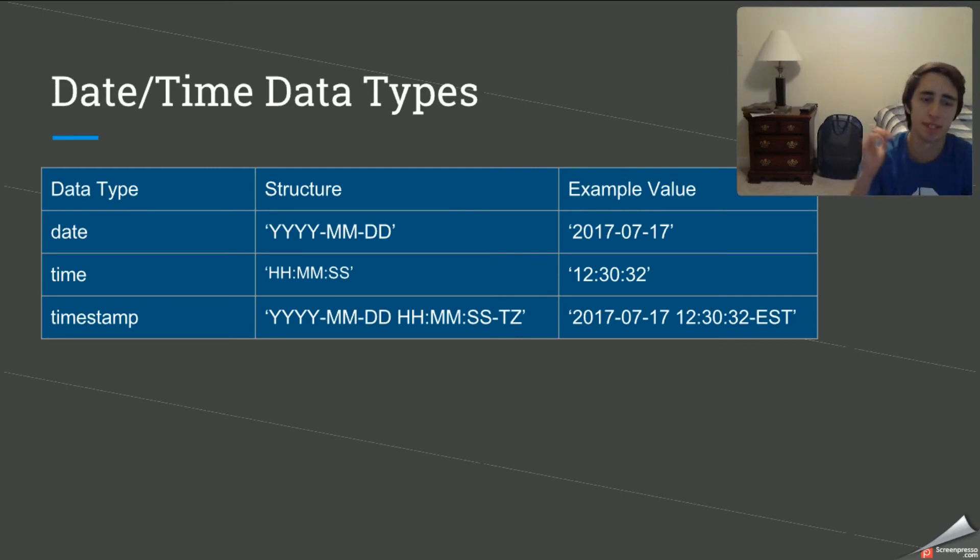Next up we have the date time data types. And again, I wanted to give you guys the simple ones that you'd be using the majority of the time. However, there are other date and time data types you can go learn. These are pretty self-explanatory. It's just knowing the structure of them. So if you have a specific date you want to record as a date in any kind of given table, you have to have the structure of a year, the months, and the day. For example, when we're recording this video is on July 17th of 2017. And we write it out in the year first, the month, and then the date.